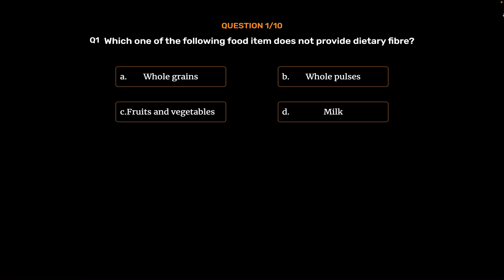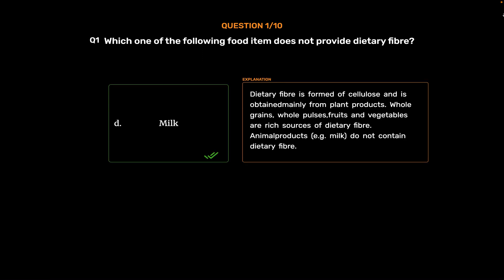The correct answer is Option D: Milk. Dietary fiber is formed of cellulose and is obtained mainly from plant products.